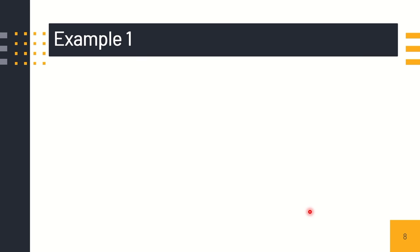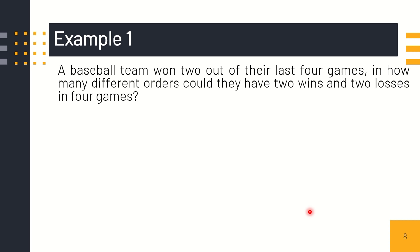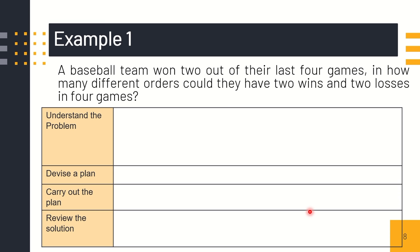Let's have example number one. A baseball team won two out of their last four games. In how many different orders could they have two wins and two losses in four games? Applying the four steps of Polya's problem-solving strategies, the first one, we need to understand the problem. What is the goal of the problem? To identify the orders in which there are two wins and two losses for the baseball team.